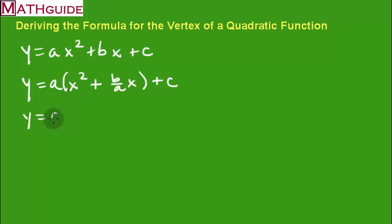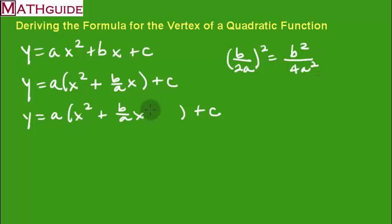I want to complete the square now and I'm doing it with letters. Quite a challenge. Normally you do these types of problems with actual numeric values. So here's the challenge: to get this value over here you take half of the fraction. What's half of the fraction? Half of b over a is b over 2a, and then you square it. So if I square that I'm going to get b squared over 4a squared, and that's what's going to go right here. I've completed the square.